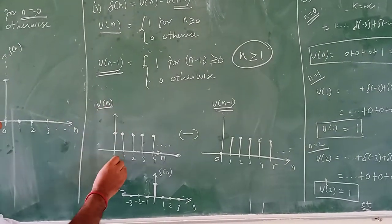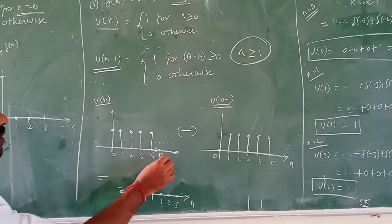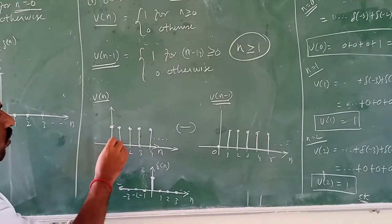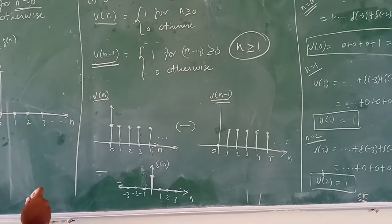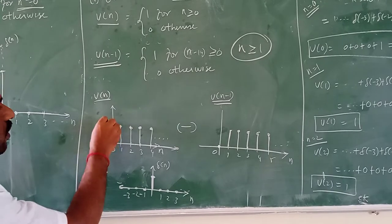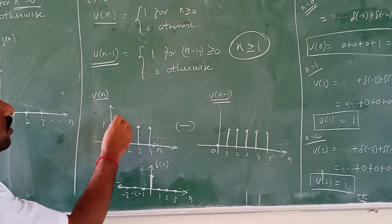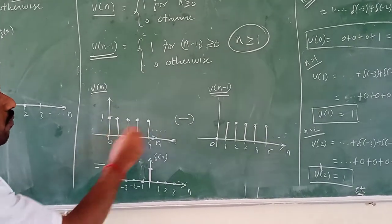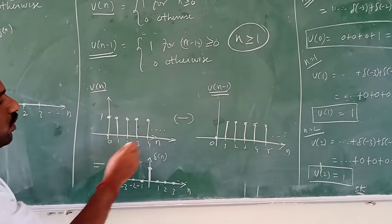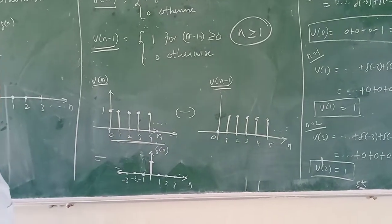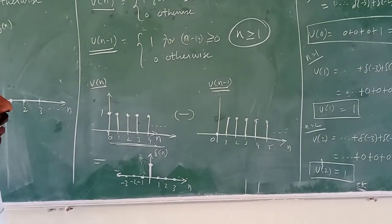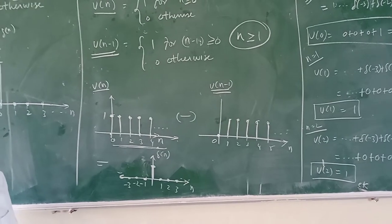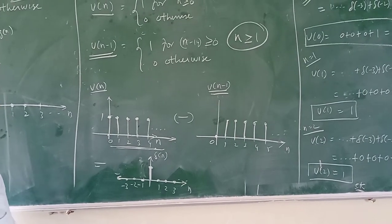For u of n, the x-axis is the n value. For n equal to 0, we have amplitude 1. For n equal to 1, also 1. For all positive integer values of n, you are getting amplitude 1.